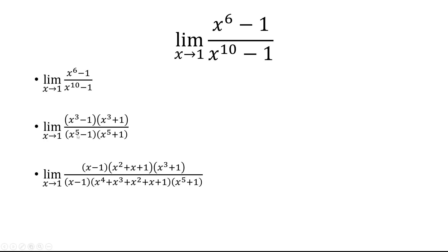And then for x to the 5th minus 1, we have x minus 1 factored. And then it's x to the 4th plus x cubed plus x squared plus x plus 1. We keep the x cubed plus 1 and x to the 5th plus 1.